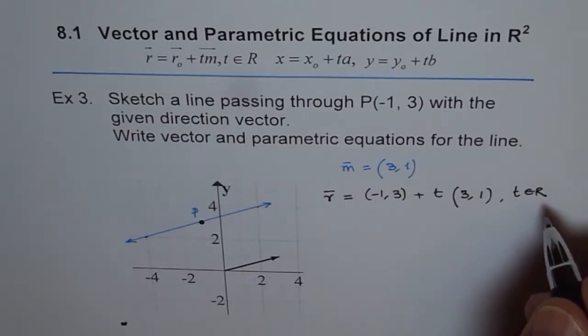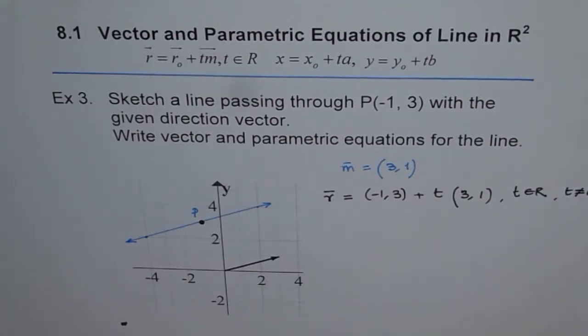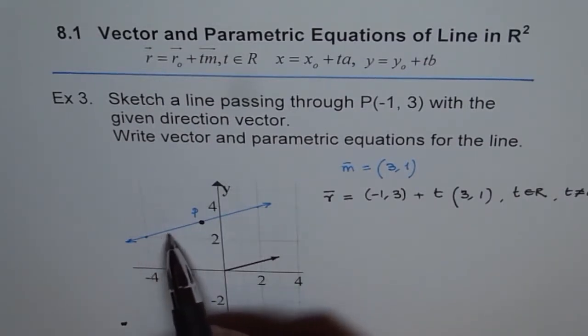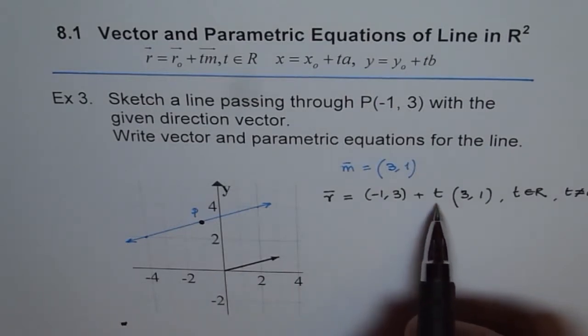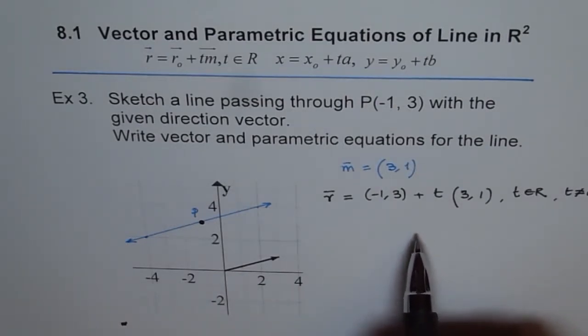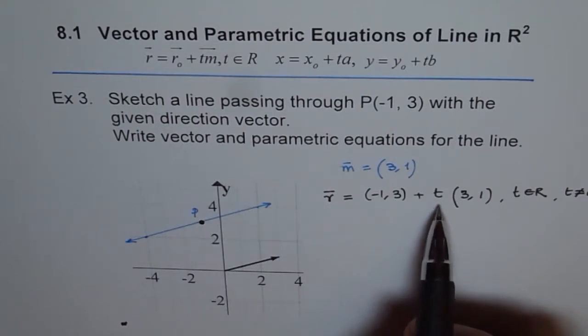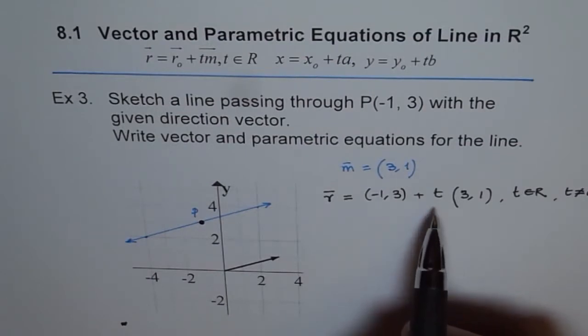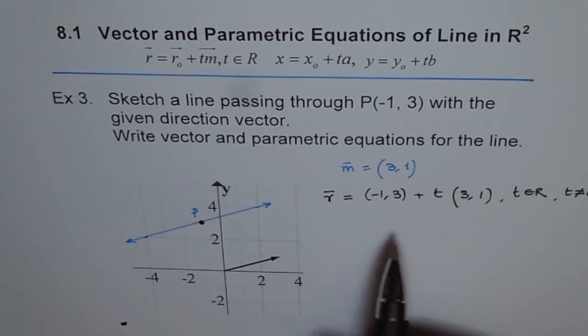And it is not equal to 0 and it belongs to real numbers. So any multiple of this direction vector will have the same direction, correct? And strictly speaking, it is this t which ensures that the line has infinite points, because for every real number t there is a unique point on the line. So remember that t is the main reason which gives infinite points to this particular line.